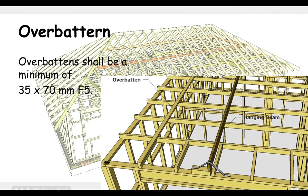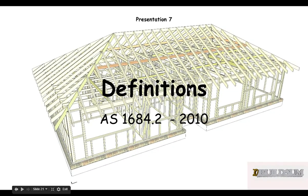An over-batten shall be a minimum of 35 by 70, F5 stress grade. An over-batten sits on top of your ceiling joists. And there we go — that's some of the definitions that are commonly used in the timber framing code.